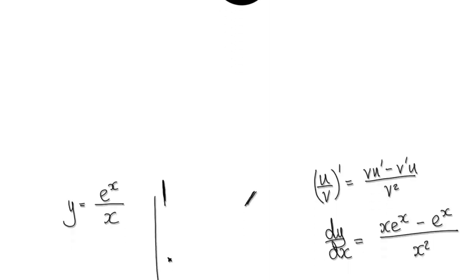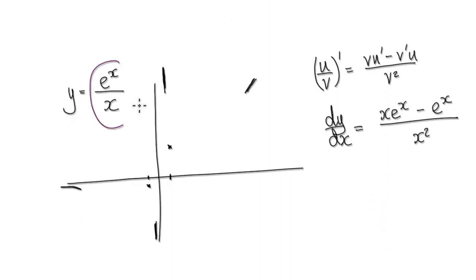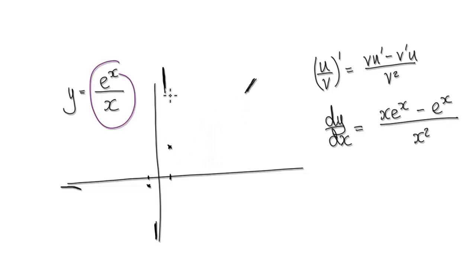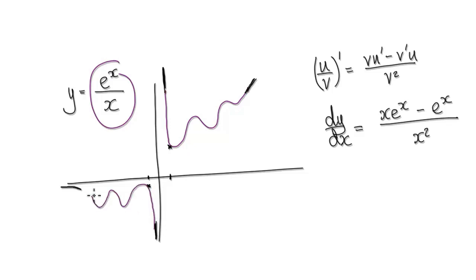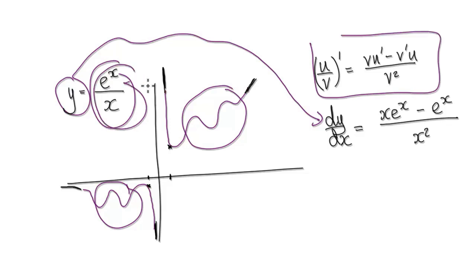Following on from the previous video, we got to this stage where we were trying to sketch this graph, and it could look something like this, or it could look something like this. To determine if it will truly do one or the other, we need to look at the gradient, so use the quotient rule and differentiate.